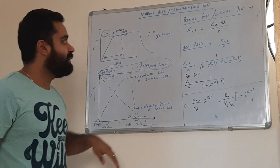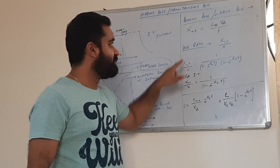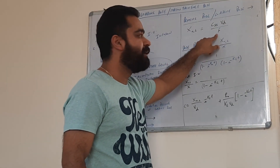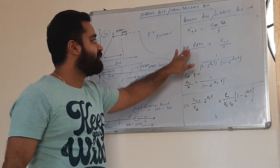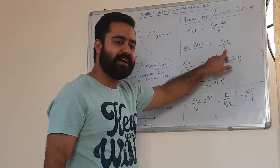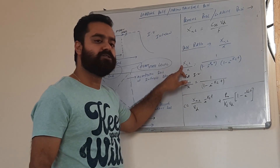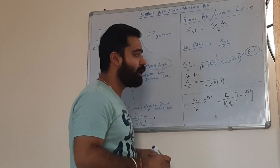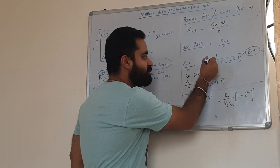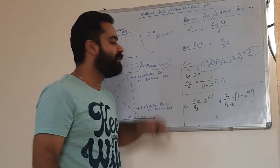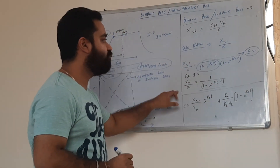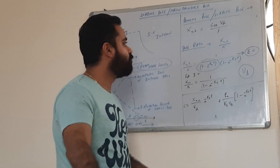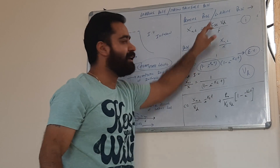The loading dose, also called the priming dose, can be calculated by the formula: x equals CSS — that is the concentration for steady state — multiplied by volume of distribution, divided by F, that is the fraction of drug available systemically. The dose ratio is x loading divided by x, that is the maintenance dose. The loading dose can also be calculated by an alternative formula valid for extravascular administration. In case of intravenous administration, we neglect the absorption term because absorption does not happen in IV — we include only the elimination term. These two formulas are used when we do not know the volume of distribution of the drug. If Vd is known, we can use the first formula to calculate the loading dose.